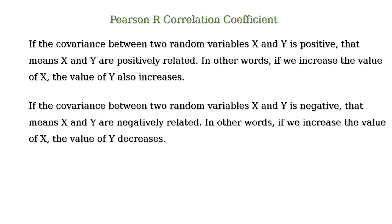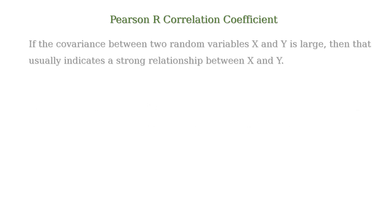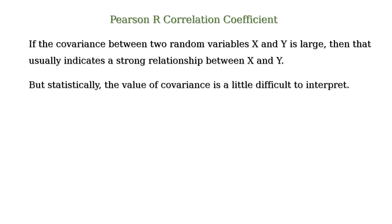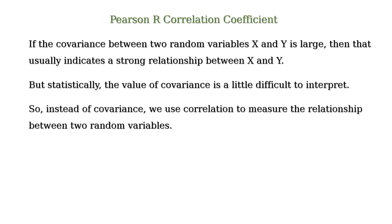In other words, if we increase the value of x, the value of y decreases. If the covariance between two random variables x and y is large, then that usually indicates a strong relationship between x and y. But statistically, the value of covariance is a little difficult to interpret. So, instead of covariance, we use correlation to measure the relationship between two random variables.